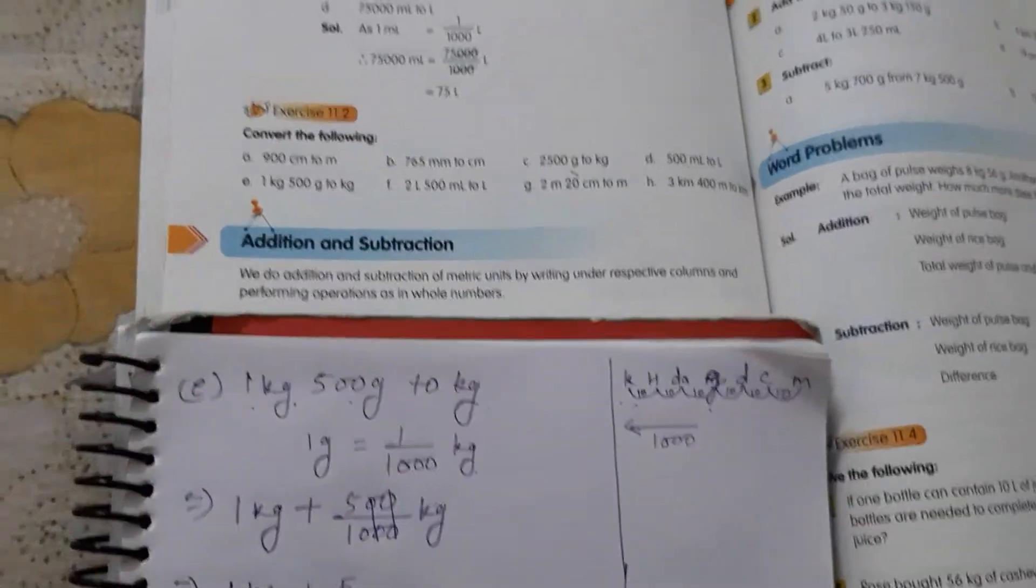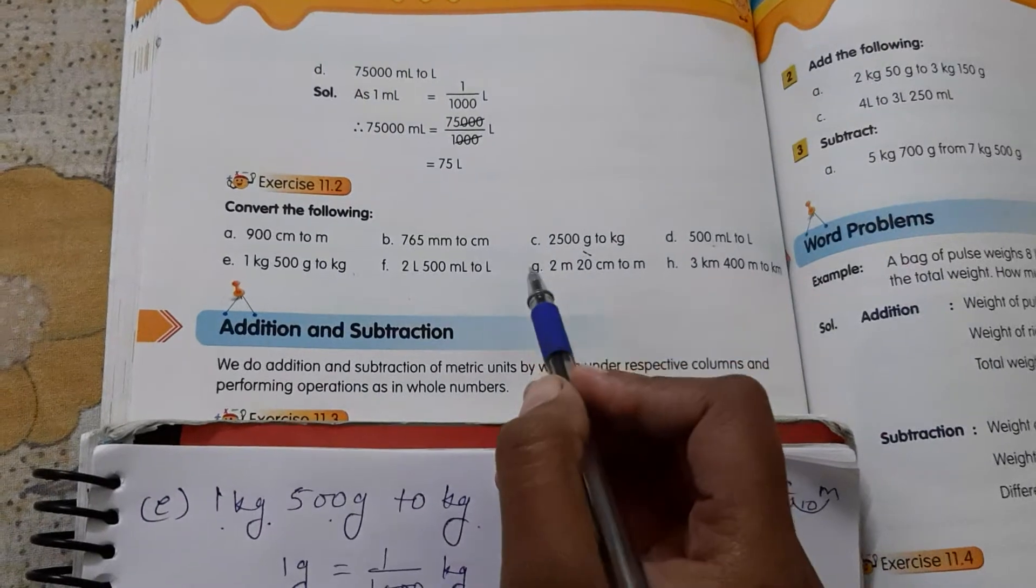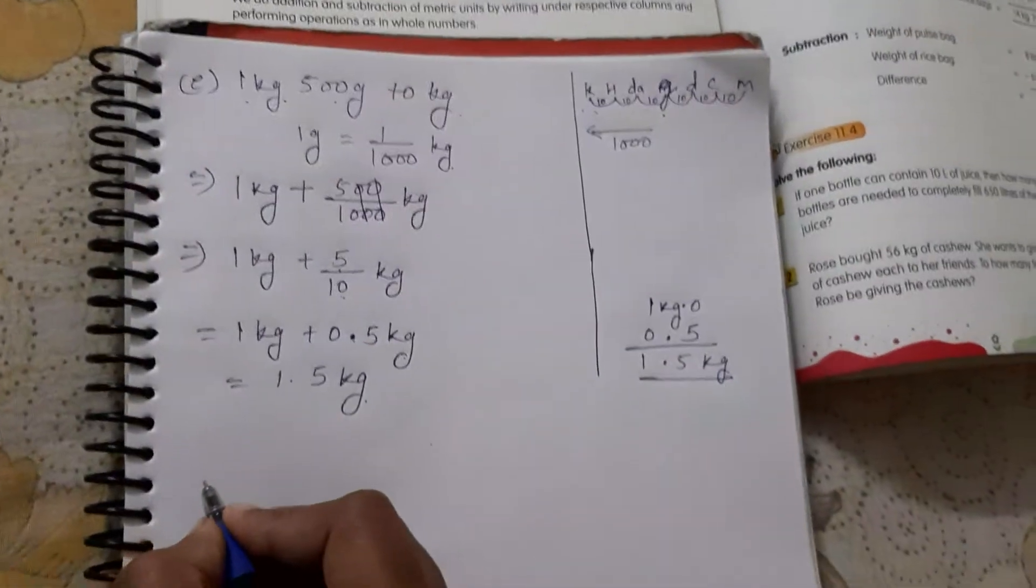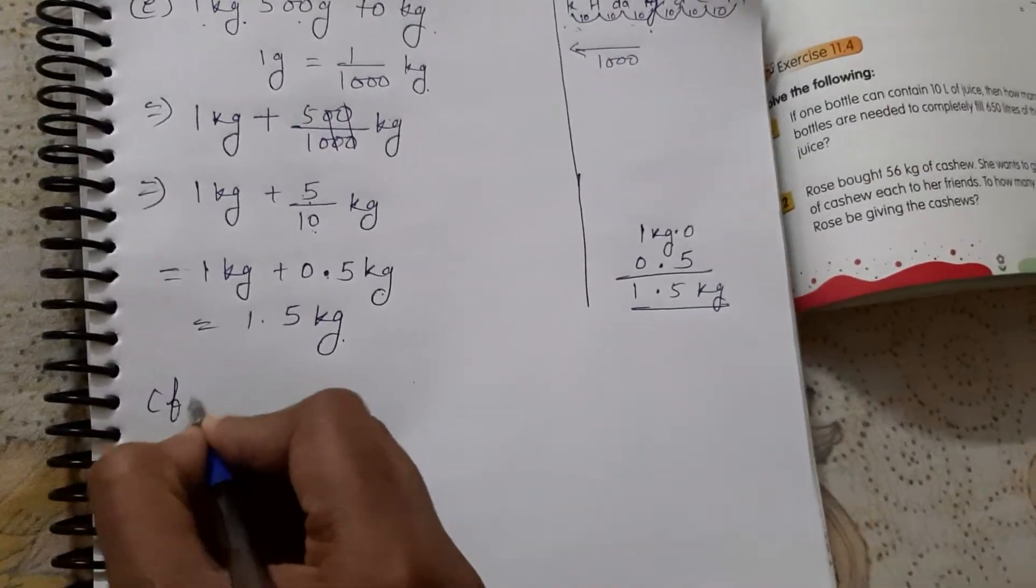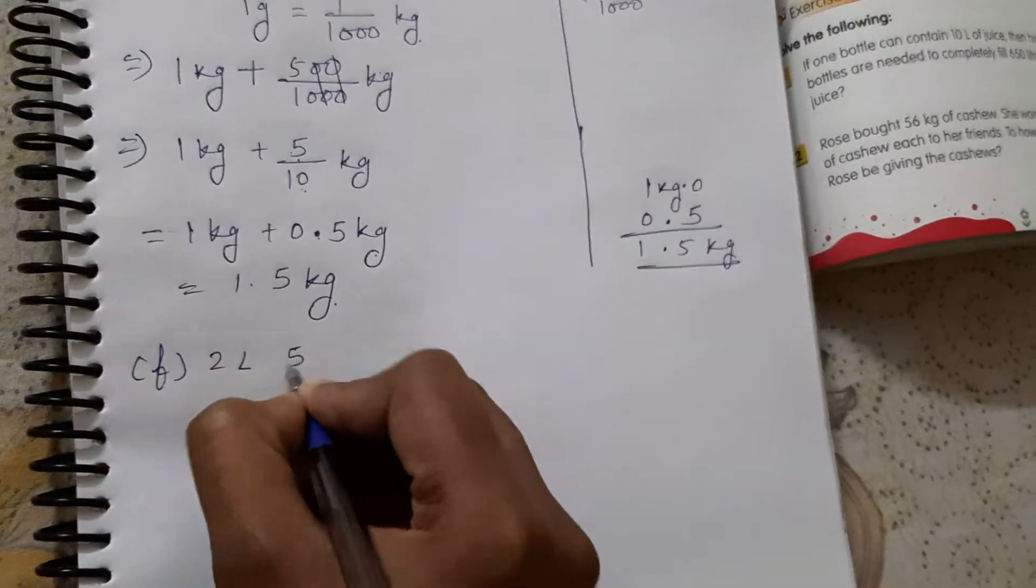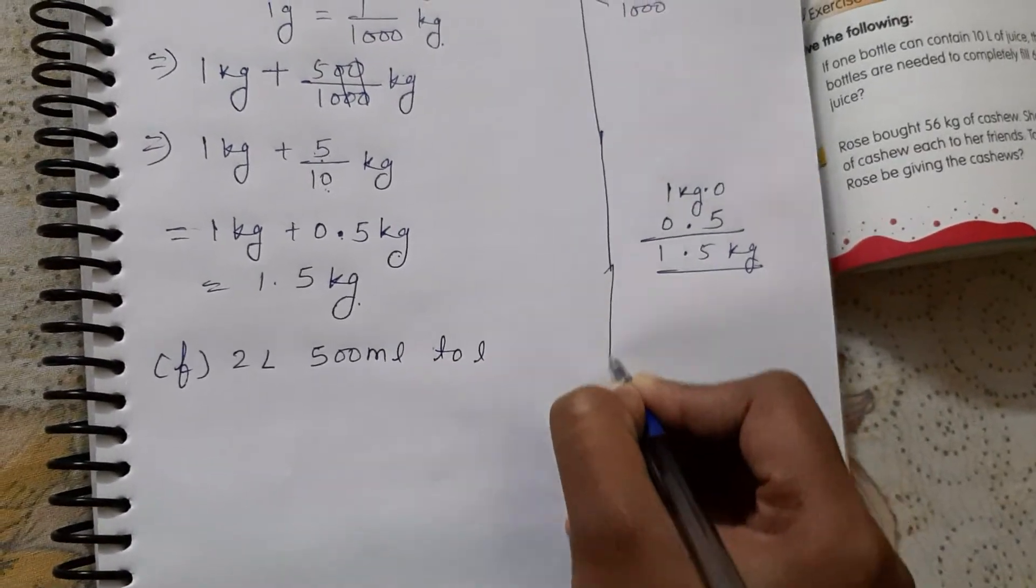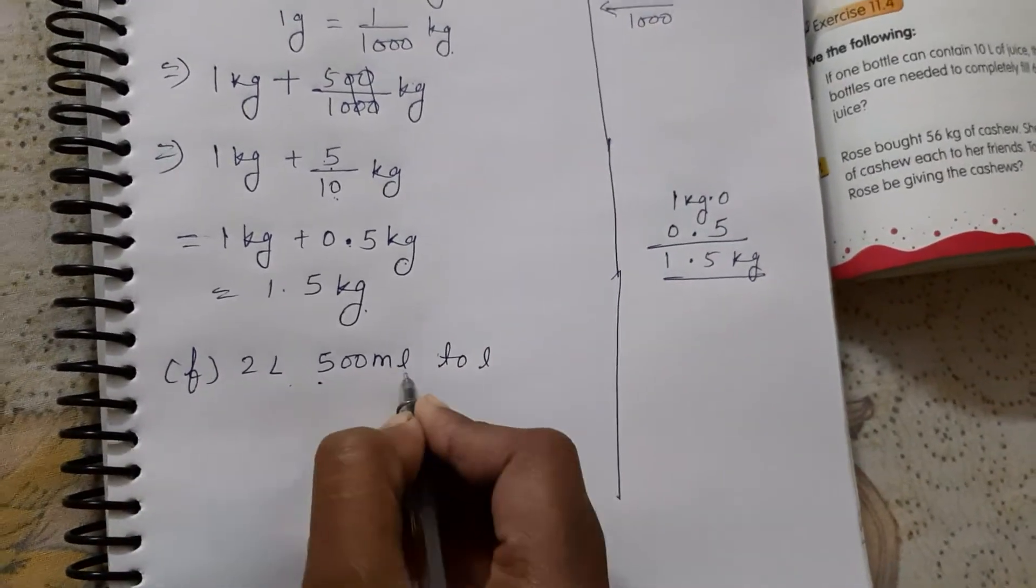Now, the next question. Same way. Two liter 500 milliliter to liter. We have to change to liter. What is already in liter, we don't need to change. Just 500.